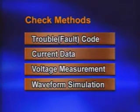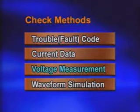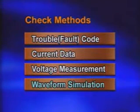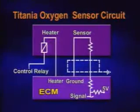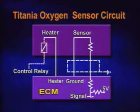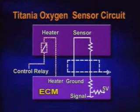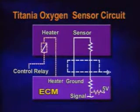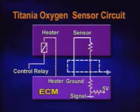The titania sensor can be checked by fault code, current data, voltage measurement at the terminals, and waveform simulation. The sensor has four terminals — two for the sensor heater and the rest for the sensor. Heater power is 12 volts from the control relay, and the other wire is controlled by the ECM with a 10 hertz duty signal. The terminal for the sensor consists of a signal wire and ground.